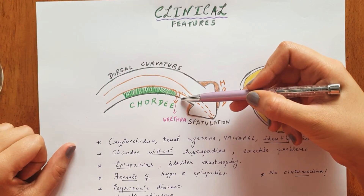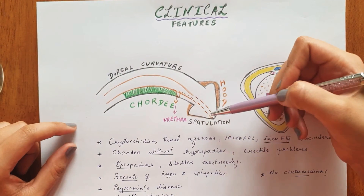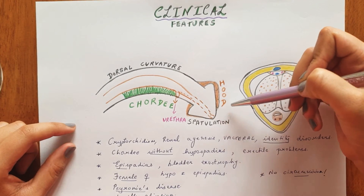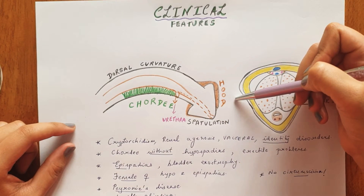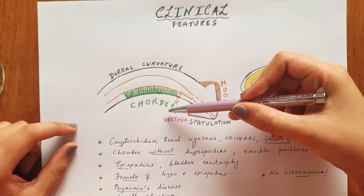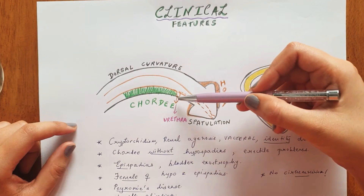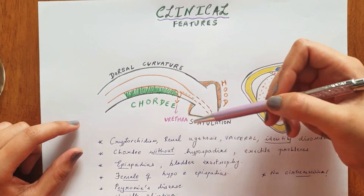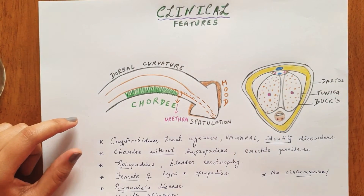Then there is the chordee, spatulation of the glans, and the hooding of the prepuce. We'll first discuss the chordee, which is associated with the abnormal urethral opening.